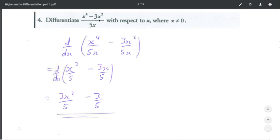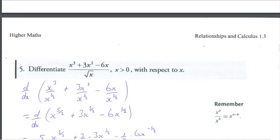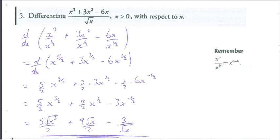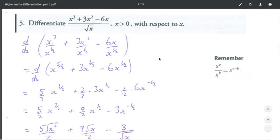What did we do in example 4? We split this up into two separate fractions. We then simplified the powers. At that point we then differentiated. We're going to do exactly the same method in question number 5. Except the only difference is we're going to have fractional powers. But the method is the same.